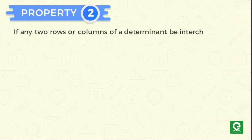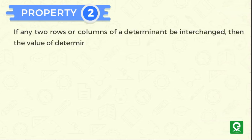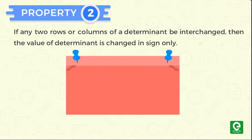Property 2: If any two rows or columns of a determinant are interchanged, then the value of determinant changes in sign only. For example,